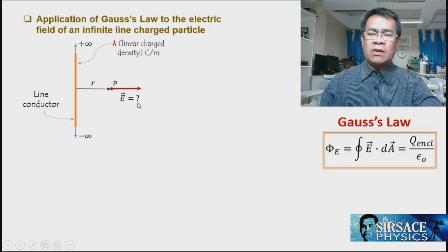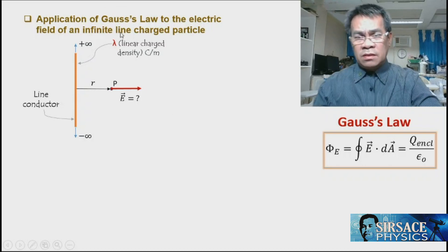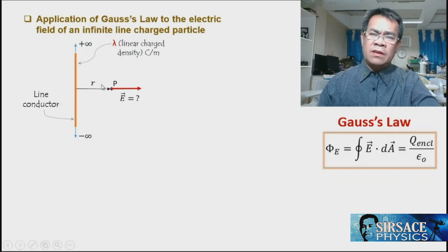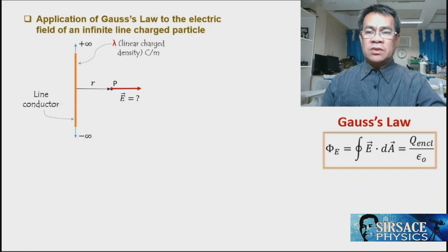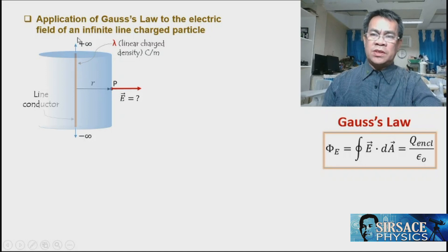We are asked to calculate the electric field at point P with radius r. To answer this, we use Gauss's Law and enclose the charge in a Gaussian surface. Since the line goes to infinity, the question is how to enclose it. We use a cylindrical surface. The question of whether we enclose everything is: no — but take note that there is no flux on the circular end-planes.